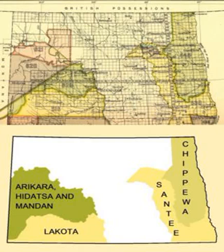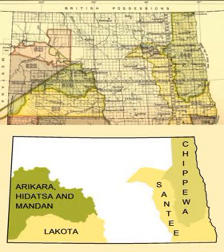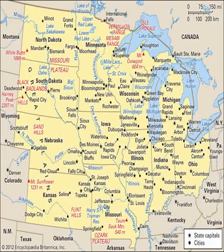One of North Dakota's nicknames is the Peace Garden State, honoring the International Peace Garden which lies on the state's border with Manitoba, Canada. North Dakota is also called the Flickertail State because of the many flickertail ground squirrels that live in the central part of the state. The state is in the U.S. region known as the Great Plains, sharing the Red River of the North with Minnesota to the east. South Dakota is to the south, Montana is to the west, and the Canadian provinces of Saskatchewan and Manitoba are to the north.